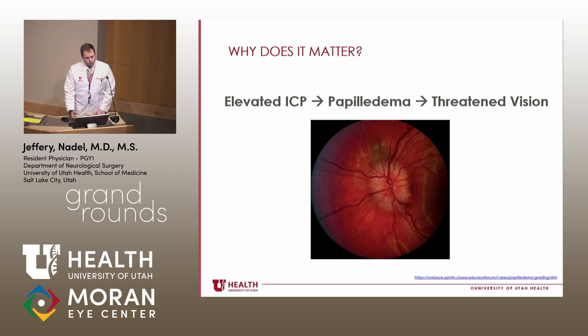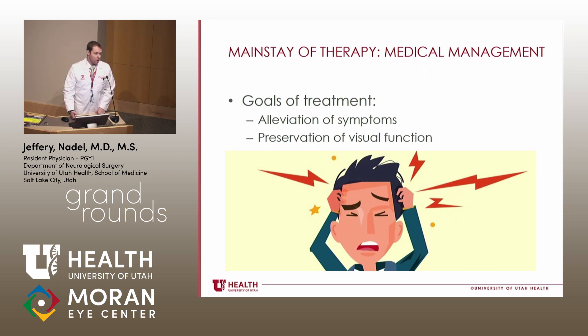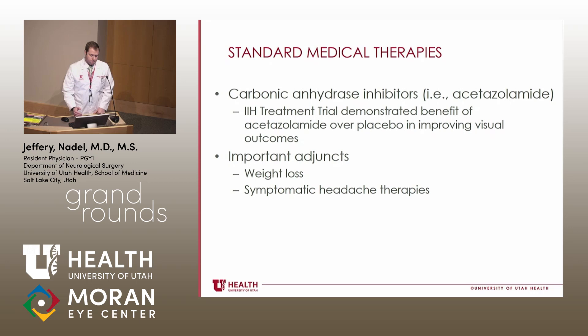Why this matters, especially to ophthalmologists, is that elevated ICP can result in papilledema, which can result in threatened vision — and that's oftentimes when neurosurgery gets involved with these patients. The mainstay of therapy for IIH is medical management, and the goals of treatment are alleviation of symptoms, including typical pressure headaches, as well as preservation of visual function to prevent constricted fields and vision loss.